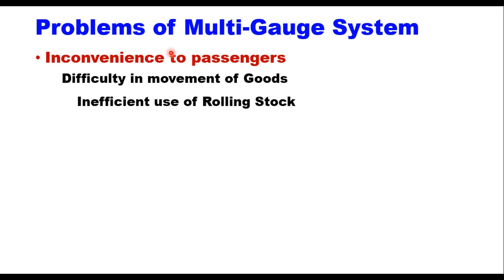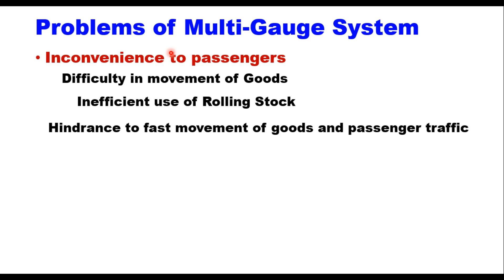The third problem is inefficient use of rolling stock. Wagons of one gauge cannot be used on another gauge, and similarly a locomotive of broad gauge cannot be used on meter gauge or narrow gauge and vice versa, creating inefficiency in the use of rolling stock. The fourth problem is hindrance to fast movement of goods and passenger traffic — due to the break in the journey, traffic cannot move fast, causing unnecessary delay which is most undesirable during emergencies or during war.